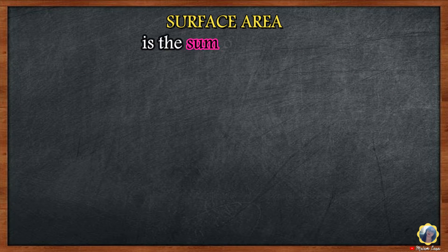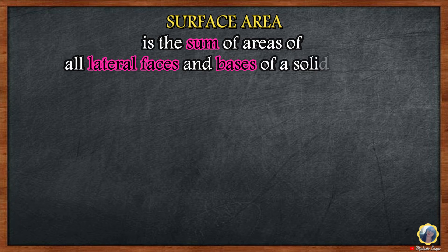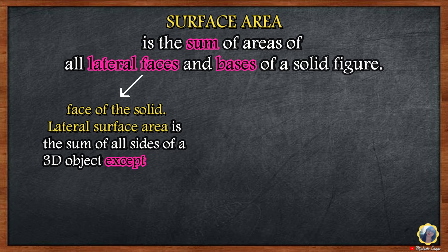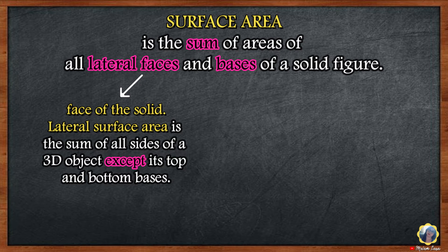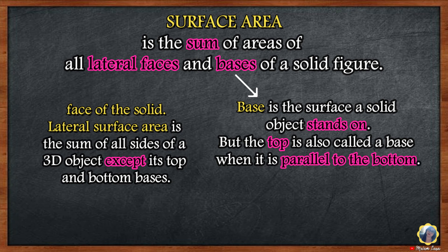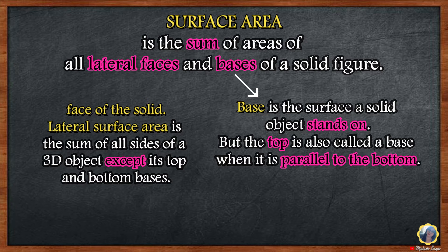Now, let's define surface area. Surface area is the sum of areas of all lateral faces and bases of a solid figure. The lateral face or lateral surface of a solid figure is the face of the solid. Lateral surface area is the sum of all sides of a 3D object except its top and bottom bases. The base is the surface a solid object stands on, or the bottom line of a shape such as a triangle or rectangle. The top is also called a base when it is parallel to the bottom.